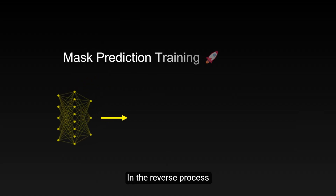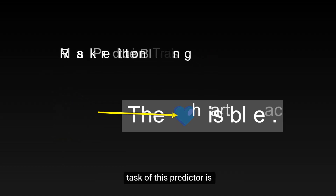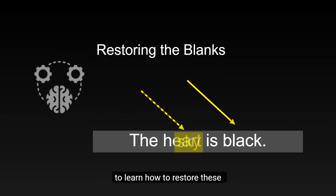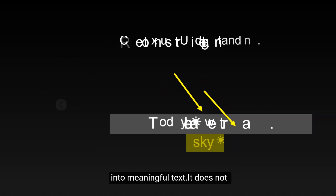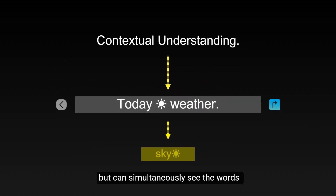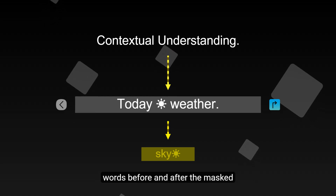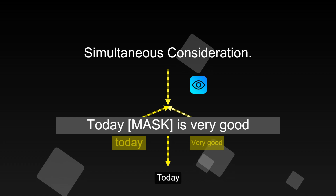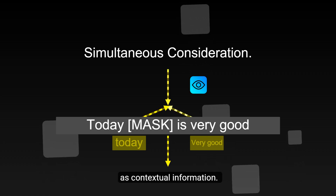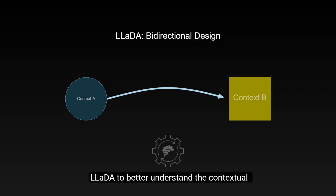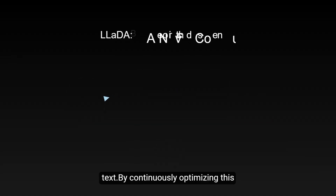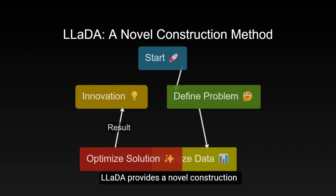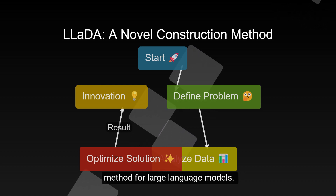In the reverse process, the model trains a mask predictor. The task of this predictor is to learn how to restore these blanks into meaningful text. It does not simply predict from left to right, but can simultaneously see the words before and after the mask positions. For example, when predicting the blank in 'today [mask] is good,' the predictor will consider both 'today' and 'is good' as contextual information. This bidirectional design allows LIDA to better understand contextual relationships in text.